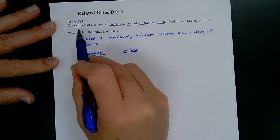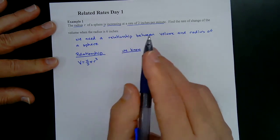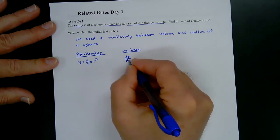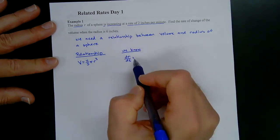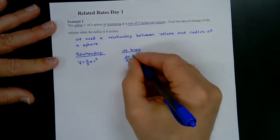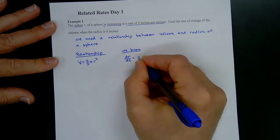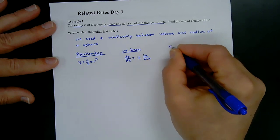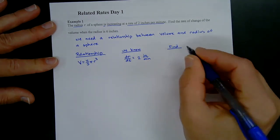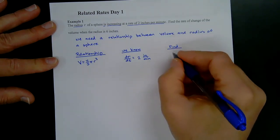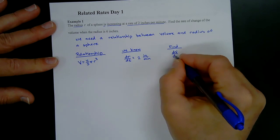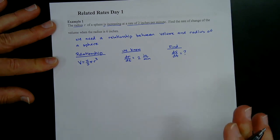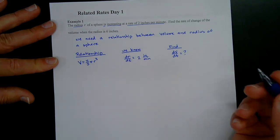We know the radius is increasing, so that is dr/dt — the derivative of the radius with respect to time. Since it's increasing, that's positive: two inches per minute. What we want to find is dV/dt — the derivative of the volume with respect to time — at the specific moment when r equals six inches.